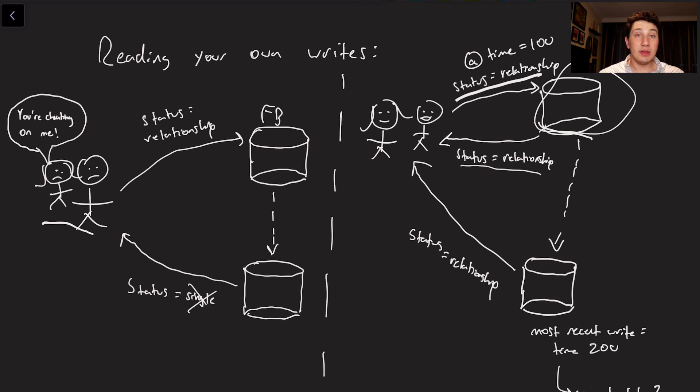But also what we could do is even put a timestamp on this write. Let's say I'm making this write at time 100. I can look at another replica, let's say this one over here, before I make a read and say, oh, have you seen writes from time 100? Oh you have? Well, that means we can read from you. It's going to contain the fact that I am in a relationship.